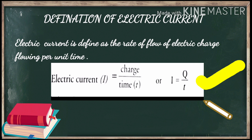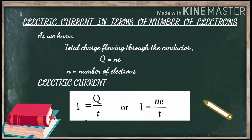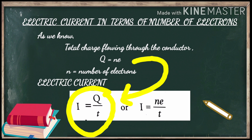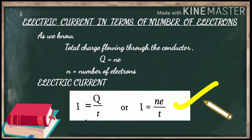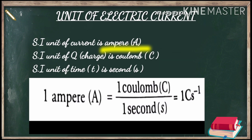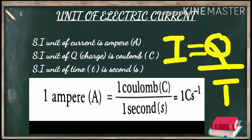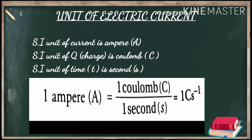The formula for electric current is I = Q / t. If we define electric current in terms of the number of electrons, where n is the number of electrons and total charge Q = ne, then putting this into the formula gives I = ne / t. The SI unit of electric current is the ampere, represented by capital A. Since the SI unit of charge is coulomb and time is second, one ampere equals one coulomb per second.